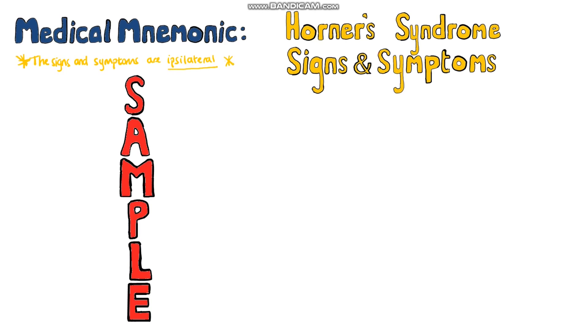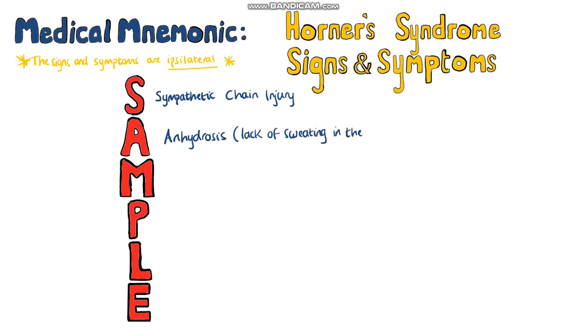S is to remind you that it is a sympathetic chain injury. A is for anhydrosis, meaning a lack of sweating in that area.